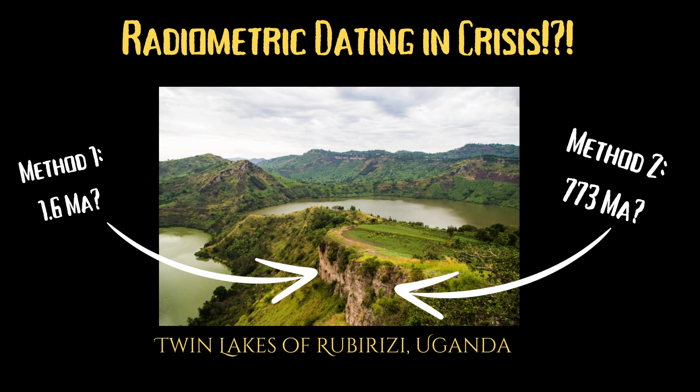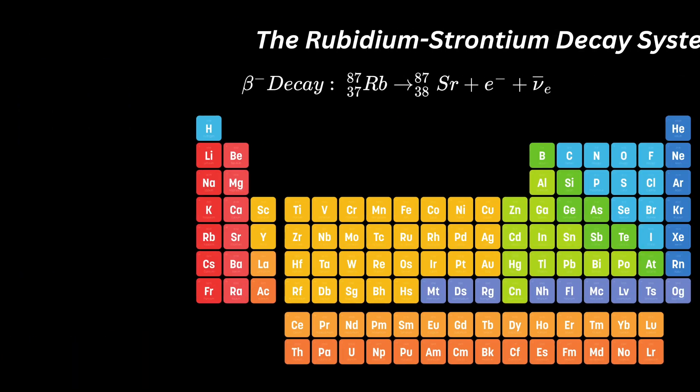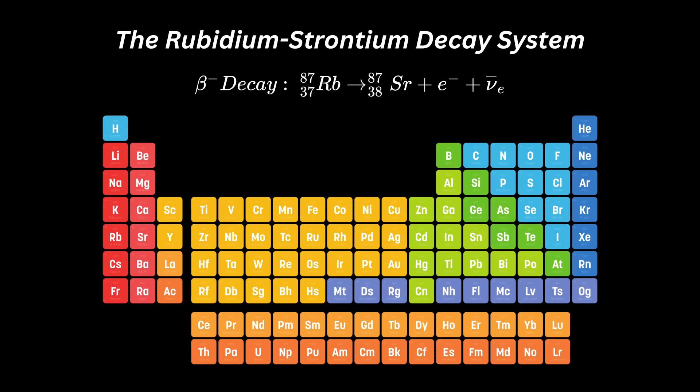To do so, let's briefly review the rubidium-strontium system. 87 rubidium is the radioactive parent which yields 87 strontium, the radiogenic daughter, by beta decay, and the half-life of this reaction is about 49 billion years.